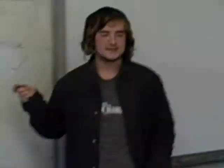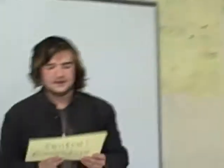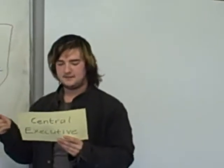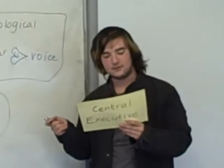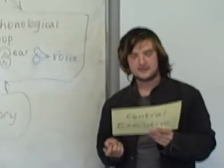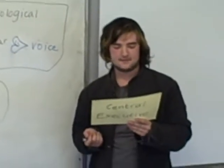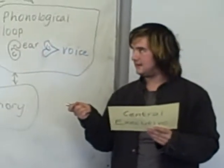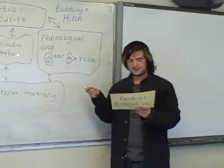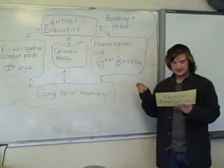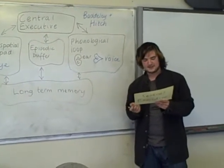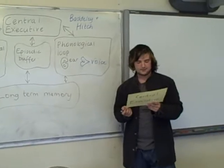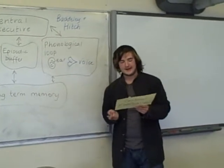So we'll start with the central executive. The central executive controls attention. It also controls the subsidiary slave systems — these are the visuospatial scratchpad, the episodic buffer, and the phonological loop. It has limited storage capacity, so it can only attend to a limited number of things at any one time.